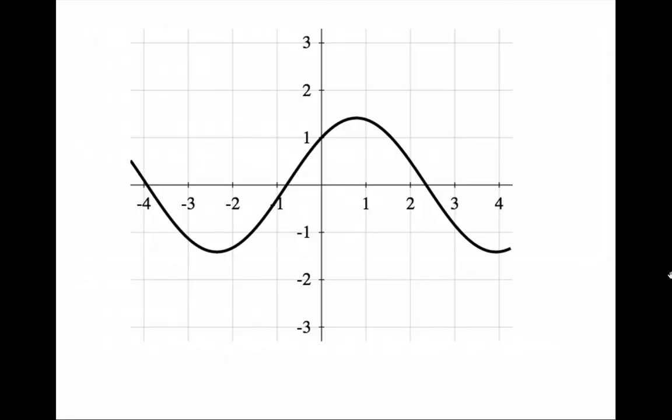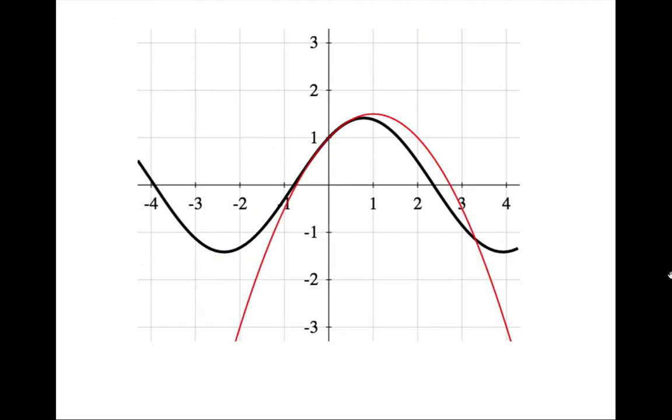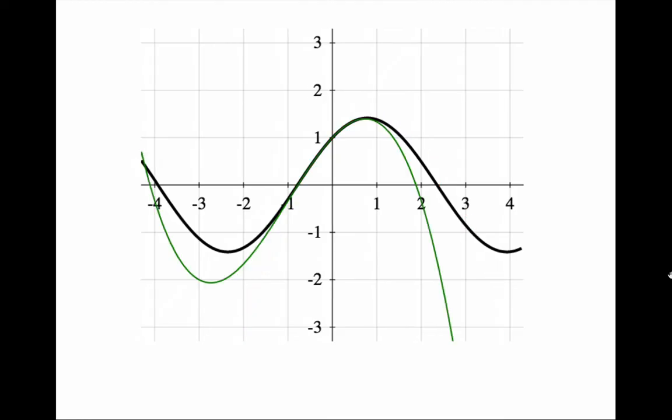As an example, consider the function with this graph. I am going to look at Taylor polynomials at 0. The first polynomial gives us the tangent line as we know. It is a good approximation near 0. This is the graph of the second Taylor polynomial. It is an even better approximation. And this is the third.